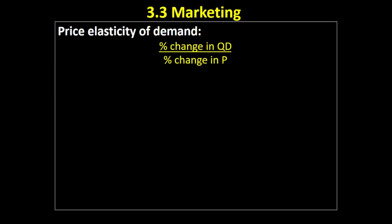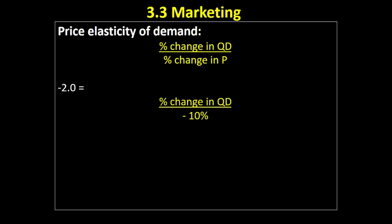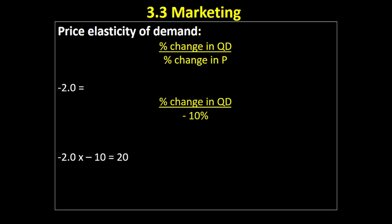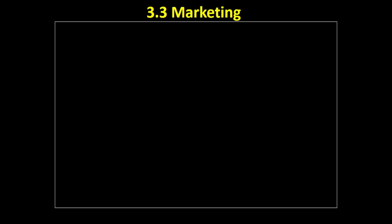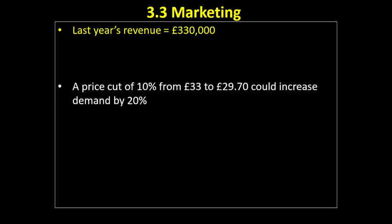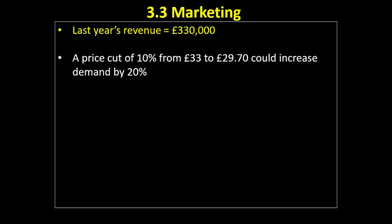What we want to do is find out: given a 10% change in price and a price elasticity of demand of minus 2.0, what would be the effect on quantity demanded? To do that we rearrange the formula. We know PED equals something divided by 10%. Rearranging: minus 2 times minus 10 equals positive 20. So a price cut of 10% with a PED of minus 2 would give an increase in demand of 20%.